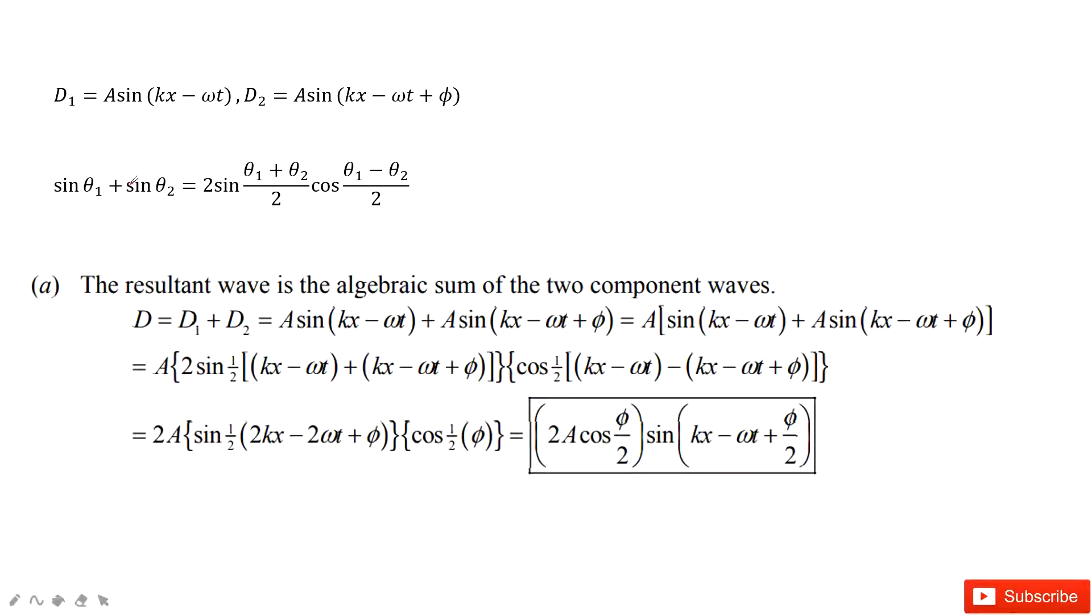We can see d1, d2 is given and this is the hint. So when we want to find the resultant waves, just d1 plus d2. And then we write it as d1 this part plus d2. And then use the hint.